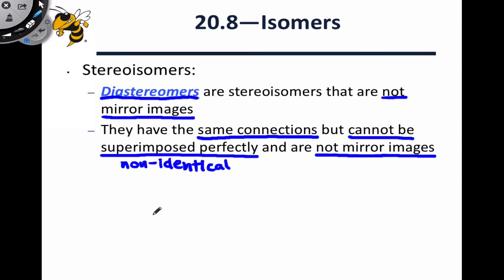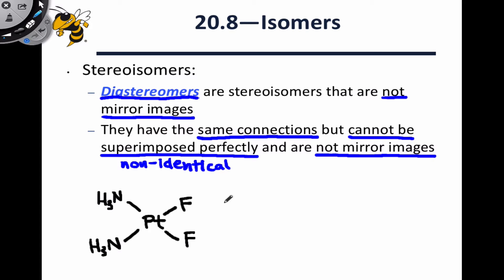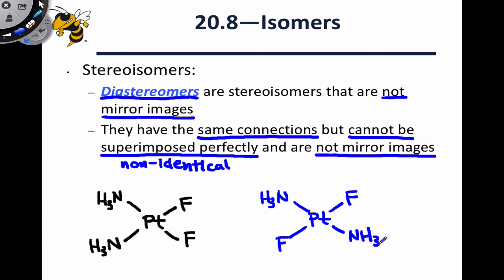Let's look at an example of a diastereomeric pair. Platinum in combination with two amine ligands and two fluorines gives a square planar complex with one possible structure. However, another possible structure with the same connections — the same bonds — positions the two fluorine ligands on opposite sides of the two ammonia ligands. Since the geometry is square planar and the ligands are fixed in their positions, these two structures are inequivalent. They have the same bonds — two N-Pt bonds and two F-Pt bonds in both structures — but different spatial positions of the atoms.